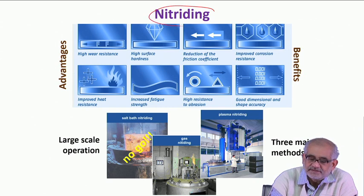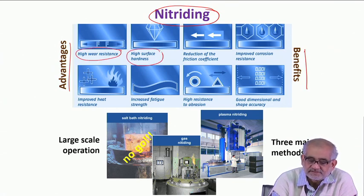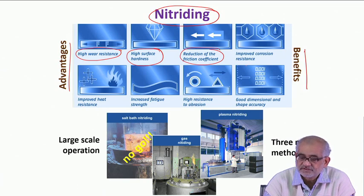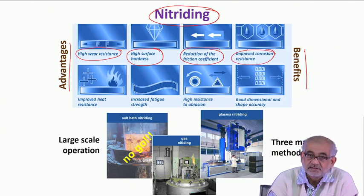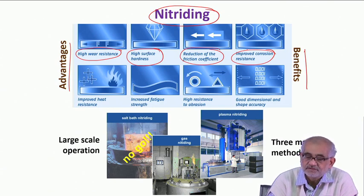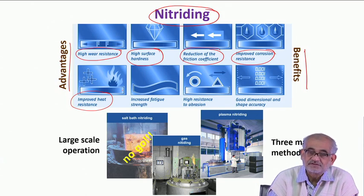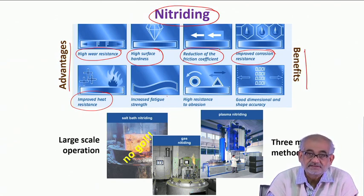There are a large number of advantages and benefits to nitriding. We derive high wear resistance, very high surface hardness — harder than what can be achieved through martensitic hardening. The coefficient of friction is reduced significantly so the surface does not offer much wear. The surface is made fairly passive, and corrosion resistance is improved over native steel. Steel that would otherwise rust easily will maintain a shining surface for a much longer period.